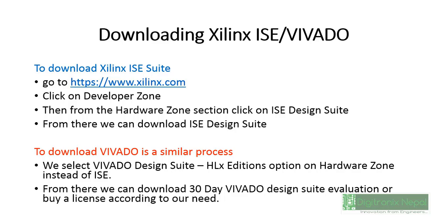Go to xilinx.com and in the download section you can get the ISE design suite repository. You can go to the archive to see previous repository versions. If you want to download Vivado, go again to xilinx.com, find the download section, select Vivado design suite, choose the necessary version, and download it. We will also show how to install the 30-day evaluation license in the next lecture.